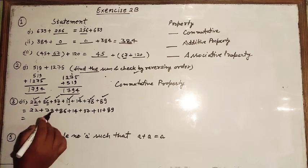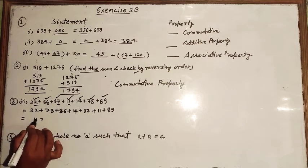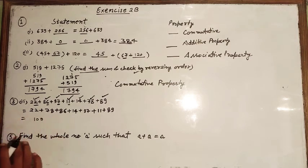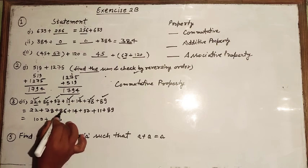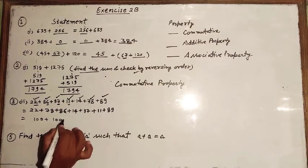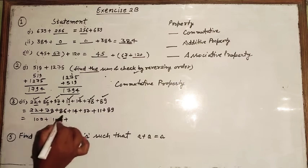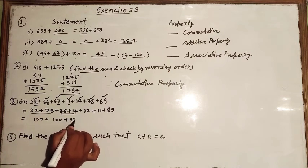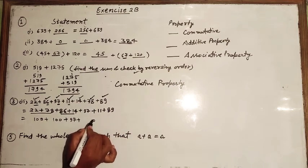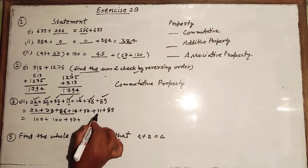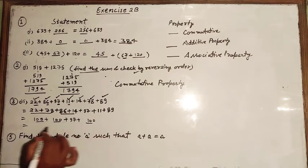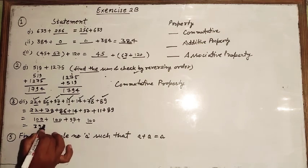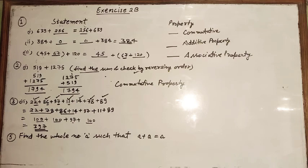Calculating: 22 plus 78 equals 100; 86 plus 14 equals 100; these two give 200. Adding 97 and 89: 7 plus 9 is 16 carry 1, 9 plus 8 is 17 plus 1 is 18, giving 186. So total is 200 plus 100 plus 97 plus 89, which equals 486. Wait — grouping gives 100 plus 100 plus 100 plus 97, total is 397. The answer is 397.